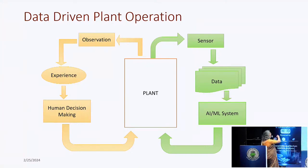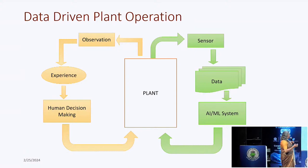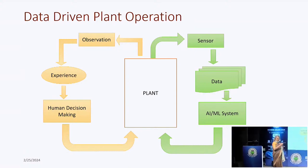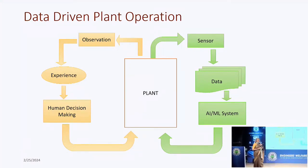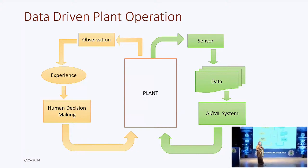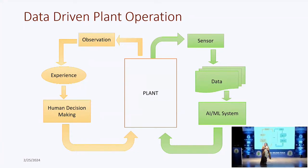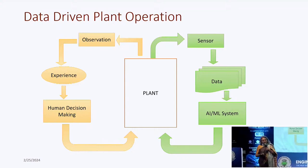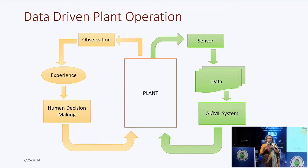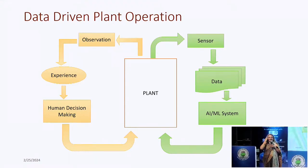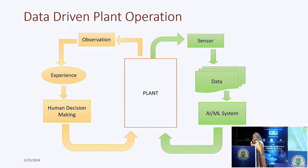There's a plant. The typical path is the yellow path where you have the observation and experience of operators and human decision making. On the other hand, if you have data-driven plant operation, you have sensors collecting data historically under different conditions, and an AI/ML system that analyzes data and takes decisions. What people try to do is build a model of the plant — what is called today a digital twin — so that based on data you can build a twin of the system and see how it works under different conditions.